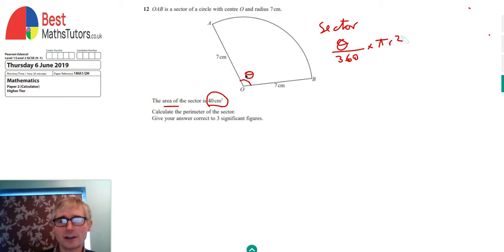In our case we actually have got the radius, which is 7, and we're also told what the area is. So we can create an equation and that'll let us find out what this angle is. So we can say theta over 360 times by pi times by 7 squared is going to be equal to 40 centimeters squared.